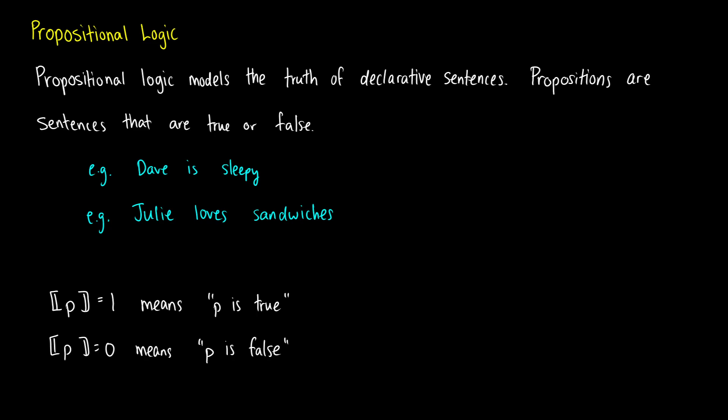Propositional logic is all about modeling the truth of declarative sentences or complex sentences formed of declaratives. A proposition is a sentence that can be true or false. For example, 'Dave is sleepy' — you might not know the facts about the world, but you can say whether or not this is true or false once you have those facts. Same with 'Julie loves sandwiches' — you know it can be true or false, but you might not know until you ask Julie.